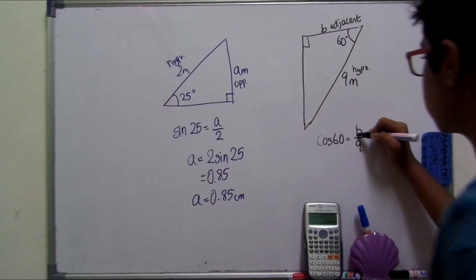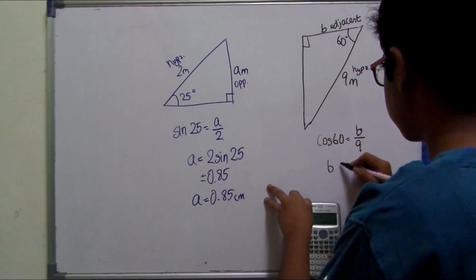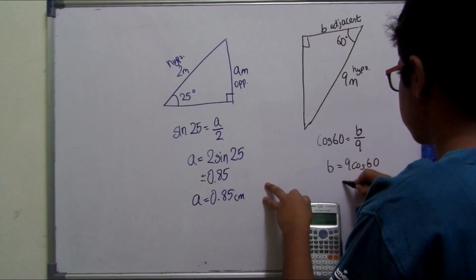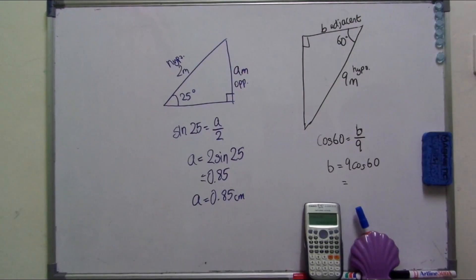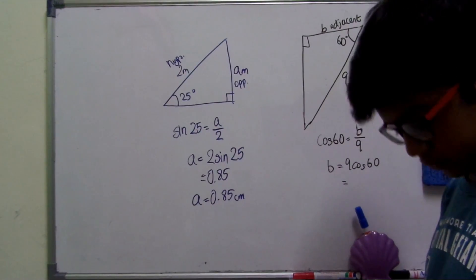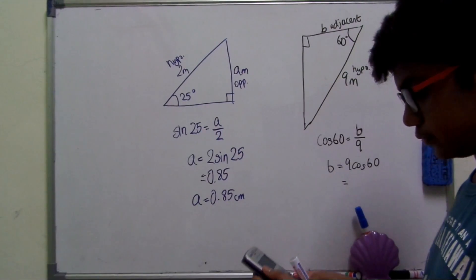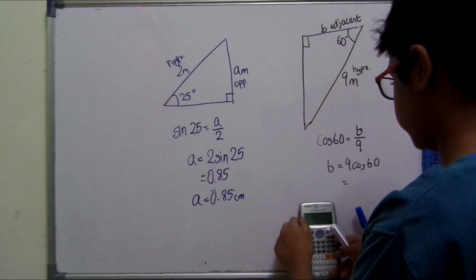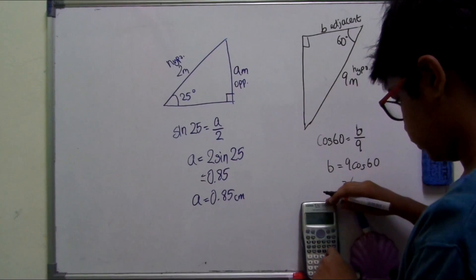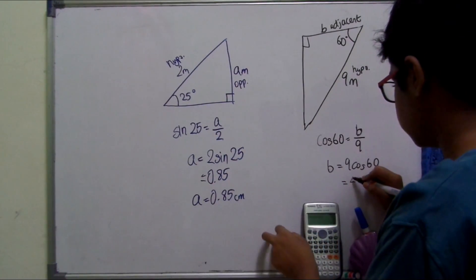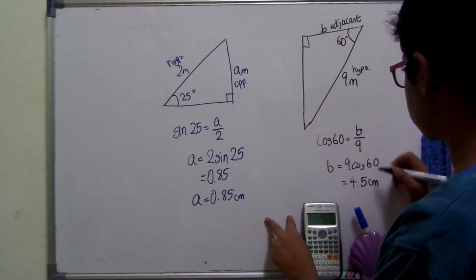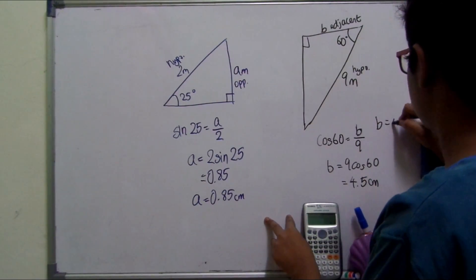And we're going to find b. So isolate b on one side and bring all the other values to the other side. So b equals 9 cos 60, which in turn equals 9 times cos 60, which is 4.5. So we're going to conclude that b equals 4.5 cm.